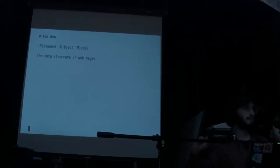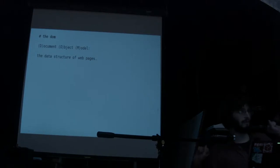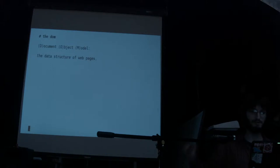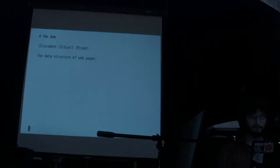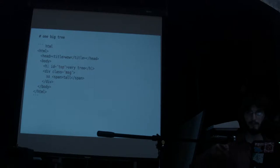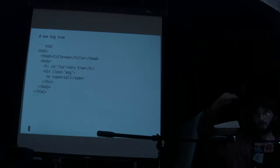Now we're going to talk about the DOM, or the Document Object Model, D-O-M. The DOM is the data structure that web pages use. It's how you can manipulate all of the elements in a page with JavaScript. The DOM is basically a big tree. When you write HTML, you're writing a tree structure.